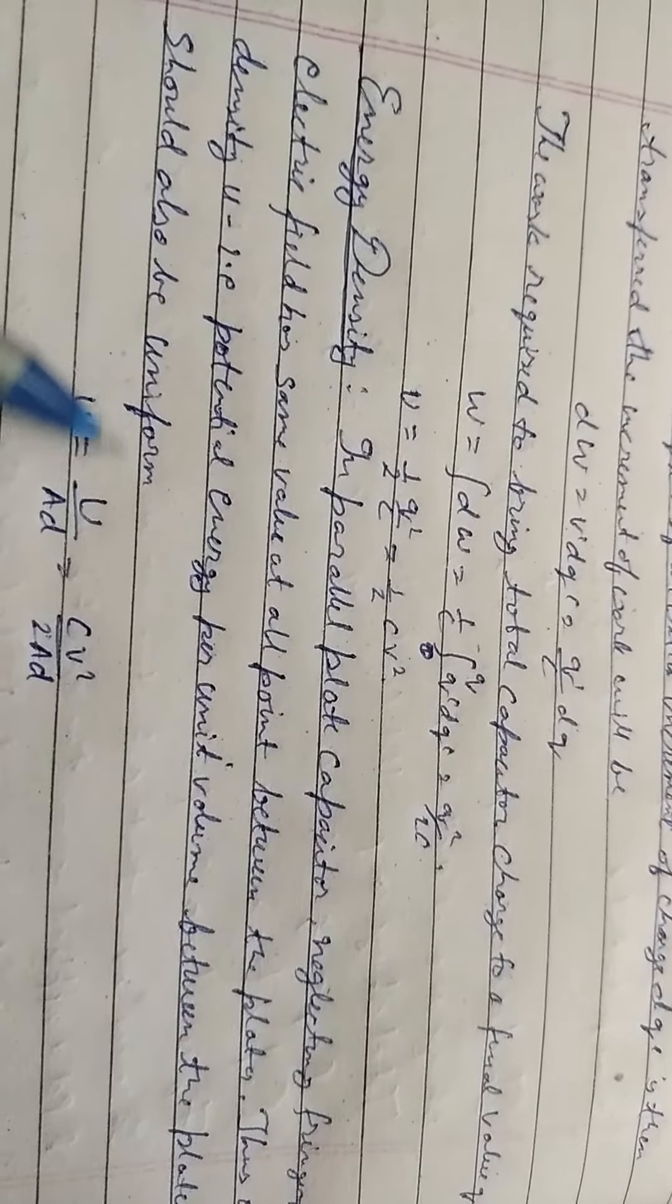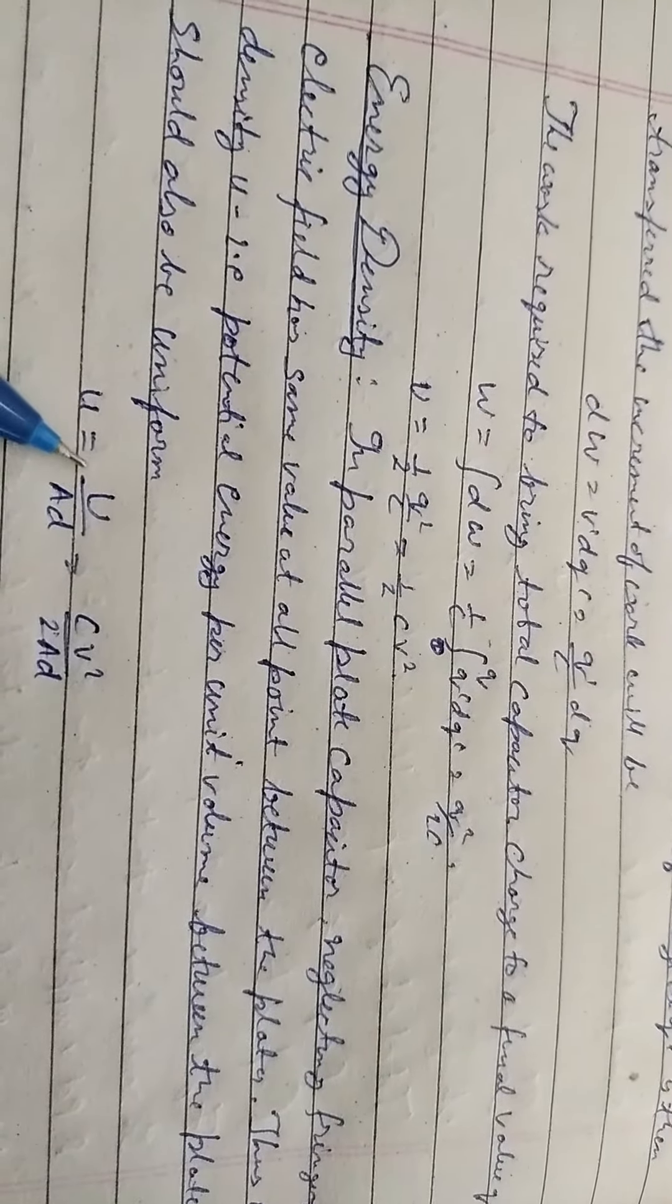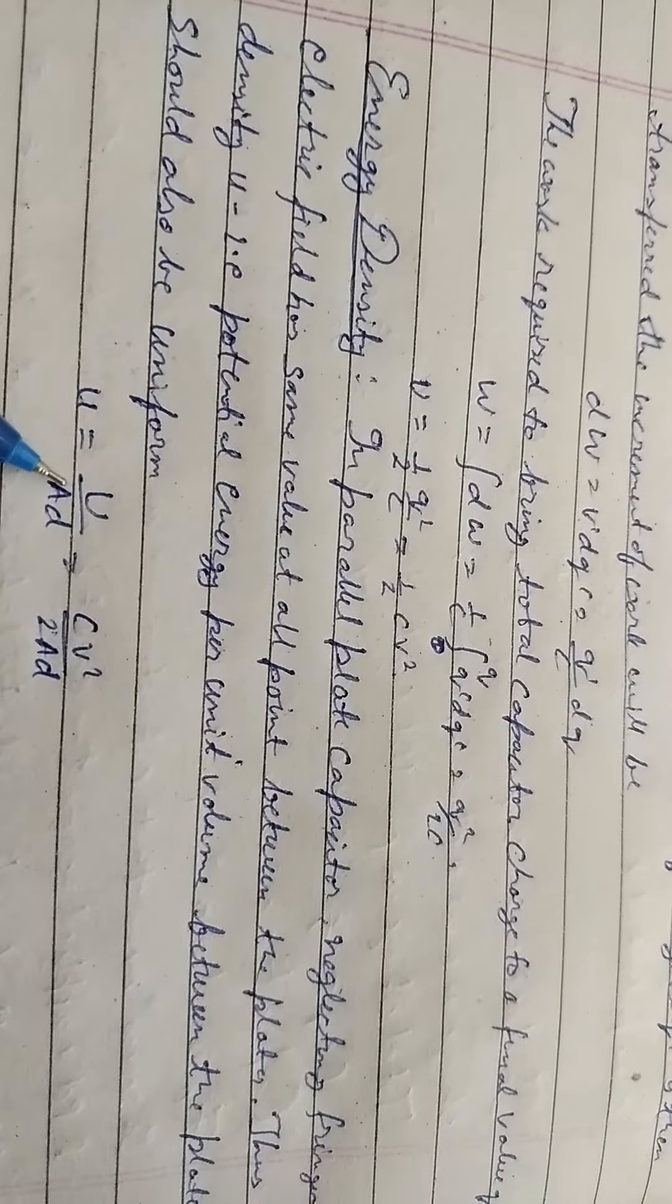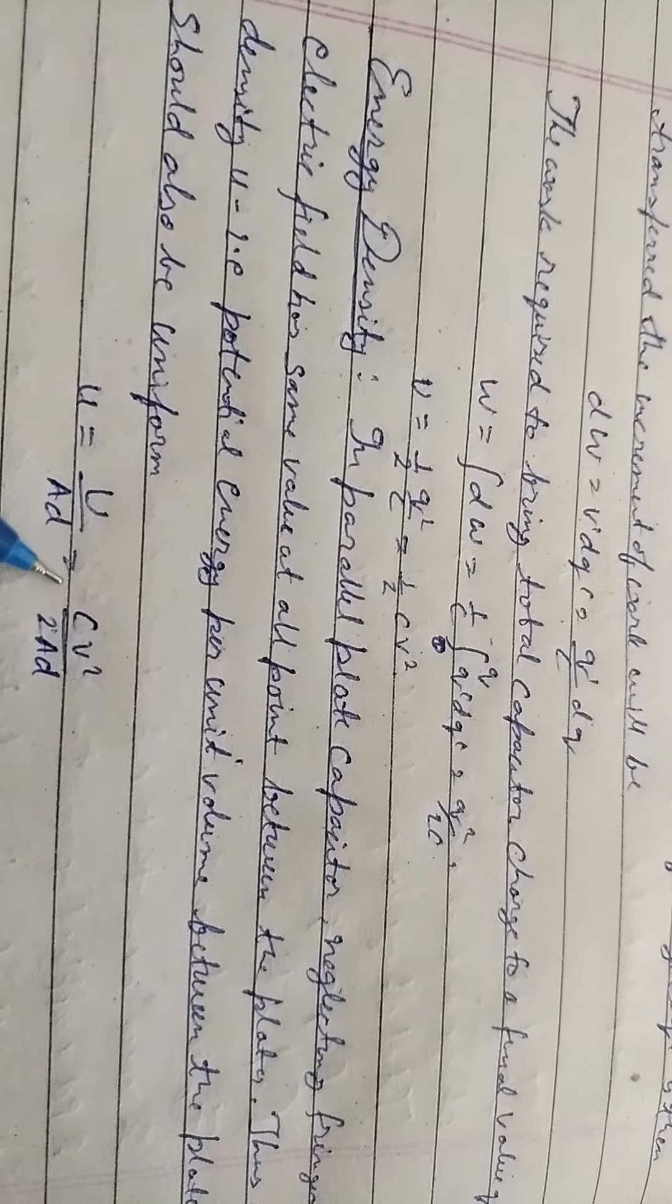Energy density U equals potential energy by area and distance between the plates equals C V square by 2AD.